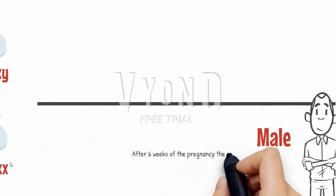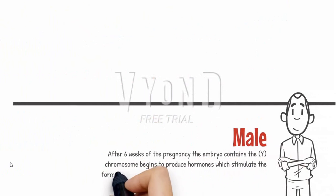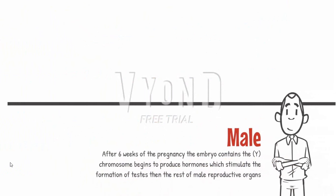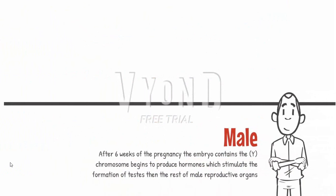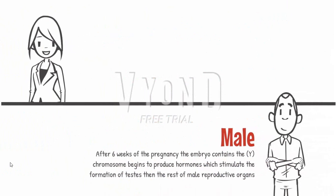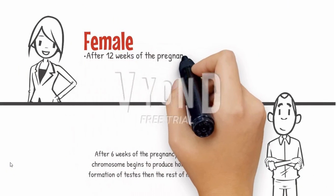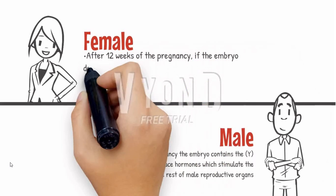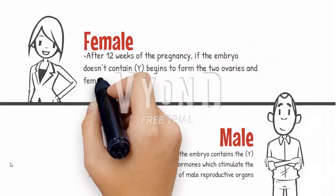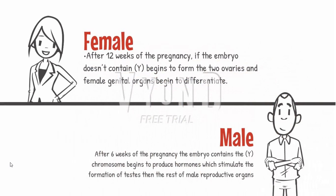After 6 weeks of pregnancy, the embryo containing the Y chromosome begins to produce hormones which stimulate the formation of the testis, then the rest of the male reproductive organs. While after 12 weeks of pregnancy, if the embryo doesn't contain the Y chromosome, it will begin to form the two ovaries and the female genital organs begin to differentiate.